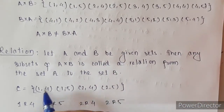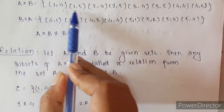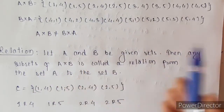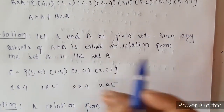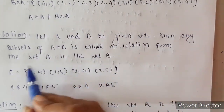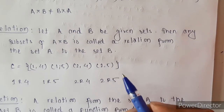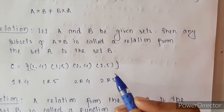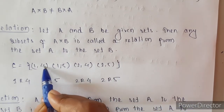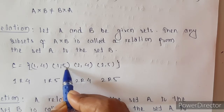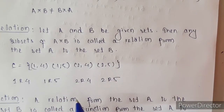For example, I have taken a subset of this A cross B: {(1,4), (1,5), (2,4), (2,5)}. I have taken only 4 elements from A cross B, so it is a subset of A cross B. This is nothing but a relation from set A to set B. Relation is usually denoted using the letter R. So: 1 is related to 4, 1 is related to 5, 2 is related to 4, 2 is related to 5.